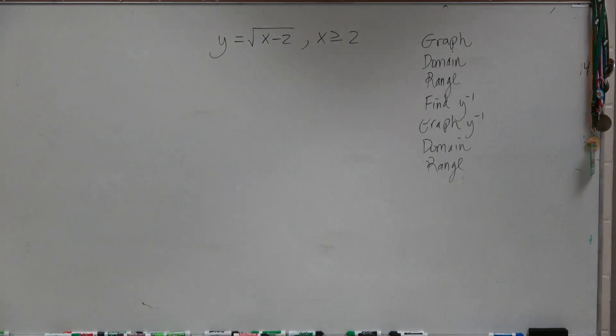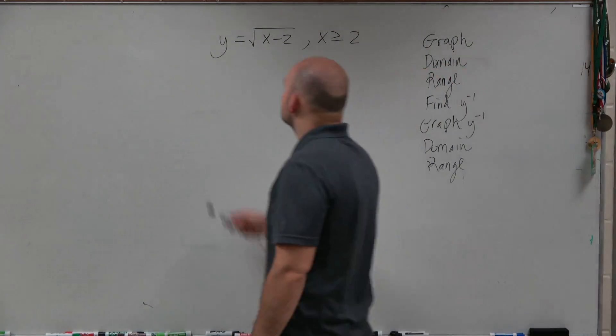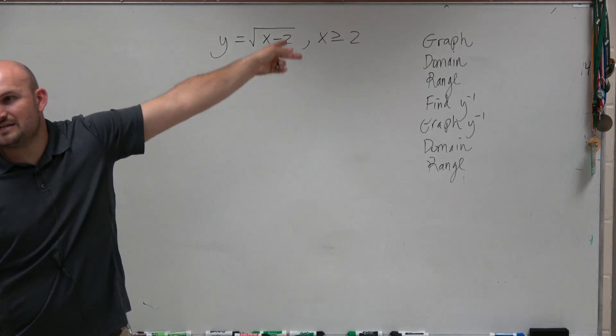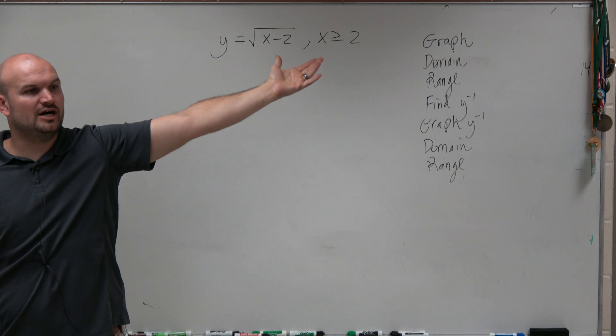If you guys were going to graph this, y equals square root of x minus 2. There is a constraint. This constraint makes sense, because if x was less than 2, it would be undefined, right?